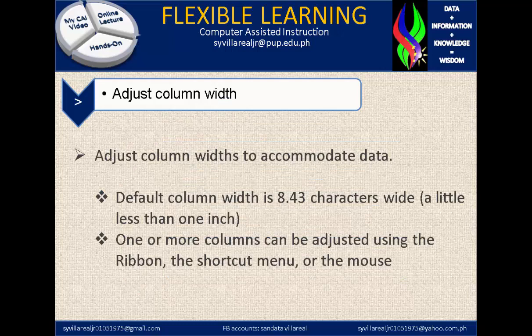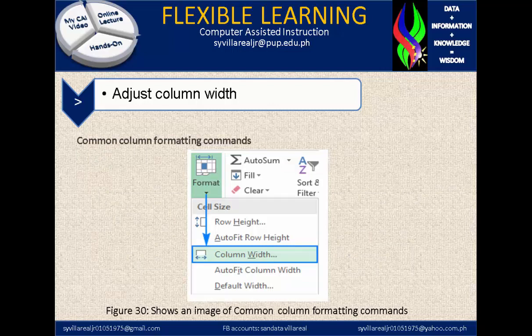Adjust Column Width to Accommodate Data. By default, Column Width is 8.43 characters wide, a little less than 1 inch. One or more columns can be adjusted using the ribbon, the shortcut menu, or the mouse. Figure 30 shows an image of common column formatting commands.